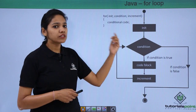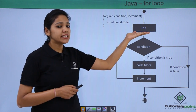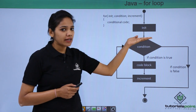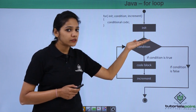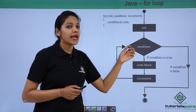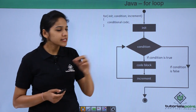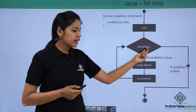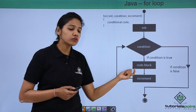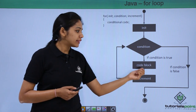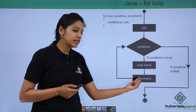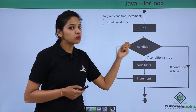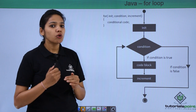Let us understand how the flow works. In the for loop we have three elements. First, initialize the variable with a value — this happens only once. Then check the condition. If the condition is false, you come outside the loop and run the rest of the statements — the loop is terminated. If the condition is true, execute the block of statements, then go to the updation. That updation may be an increment or decrement. Once updation is made, it goes back to the boolean expression to check if the condition is true or false.